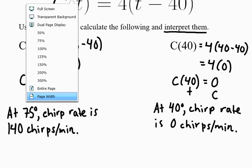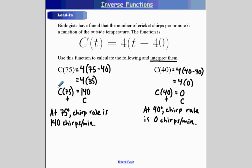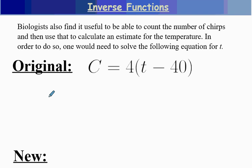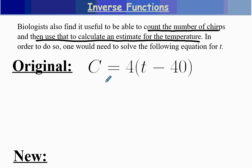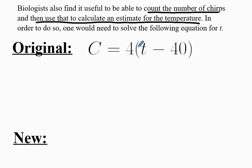That's how the regular function notation works. It would be slightly more interesting if I could count the number of chirps outside and use that to determine an estimate for the temperature. The problem with the original formula was I supplied a temperature and it gave me a chirp rate. I want the opposite — I need to re-solve this equation so that I have T equals, so that I supply a chirp rate and it returns a temperature estimate.